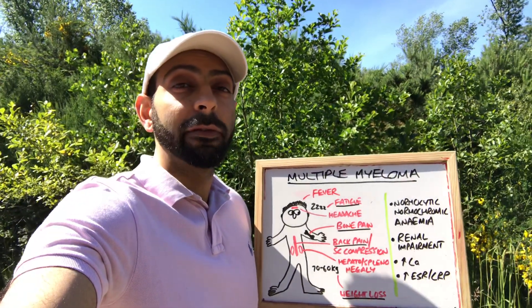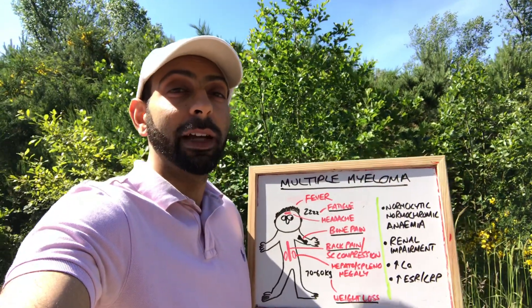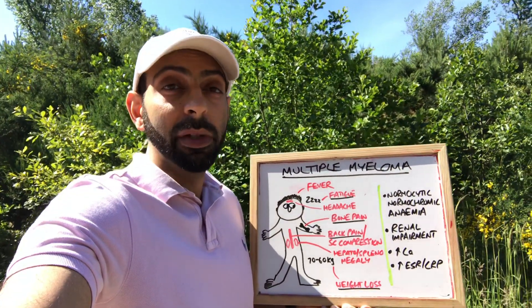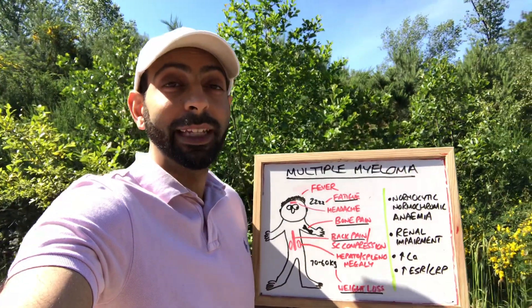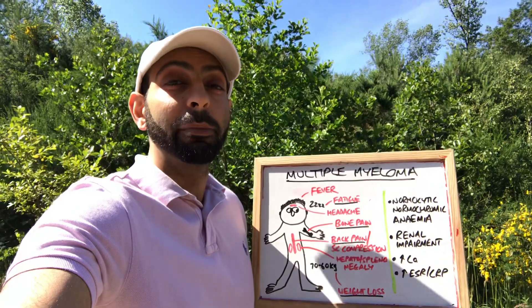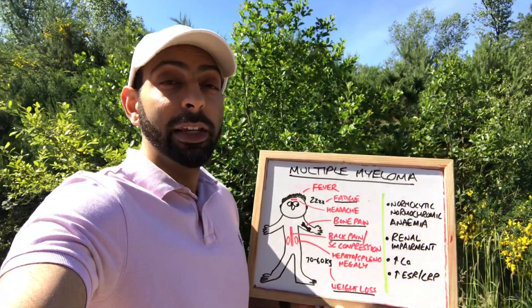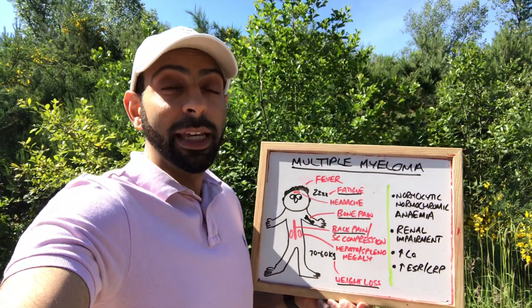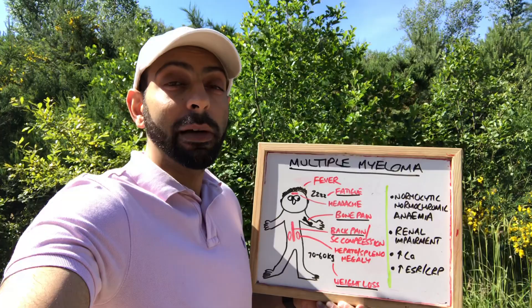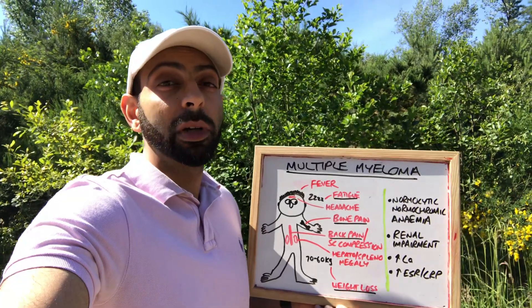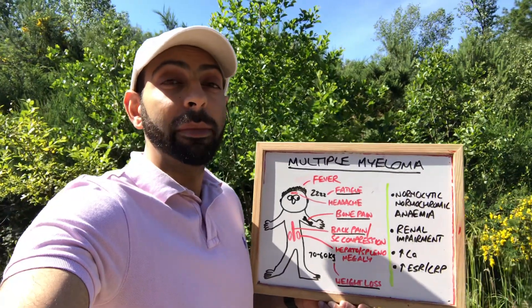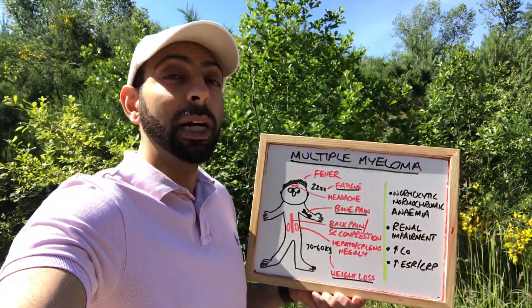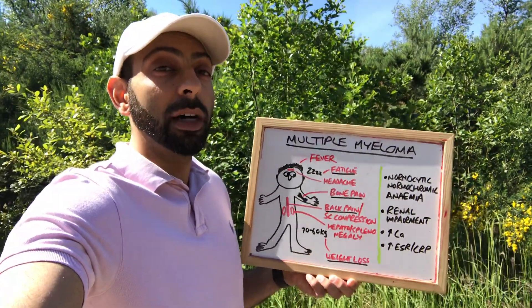It can present in a variety of different ways. It's a condition that can affect the blood system, it can affect the immune system, it can affect the kidneys, it can affect the bones. You get this abnormal plasma cell proliferation in the bone marrow, as well as things like monoclonal immunoglobulins in the blood. But how might it present to us?